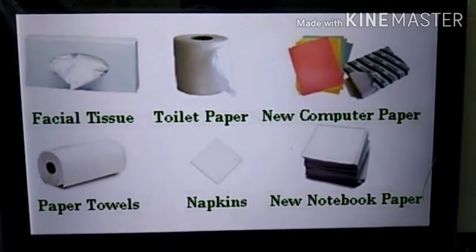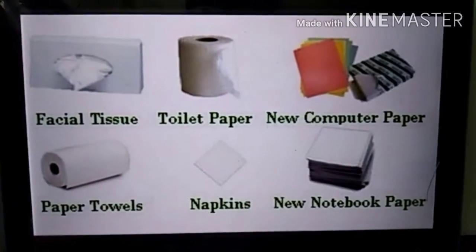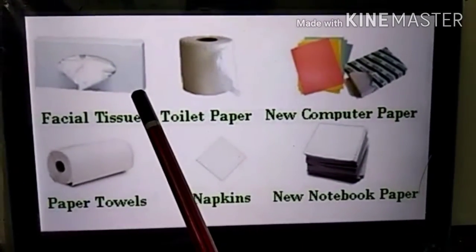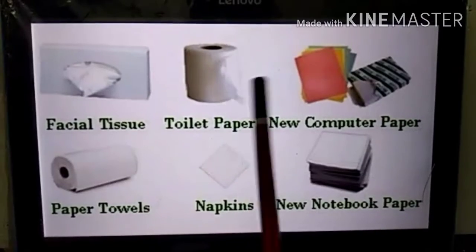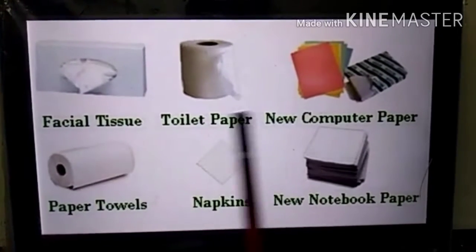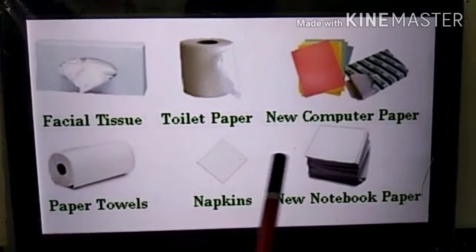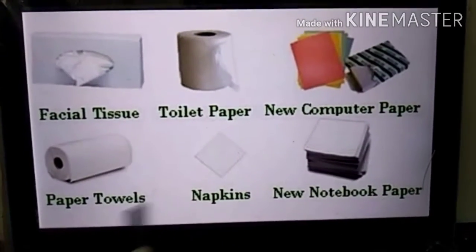Next is paper. We make tissue paper, toilet paper, computer paper, paper towels, napkins, and notebooks — all made of paper.